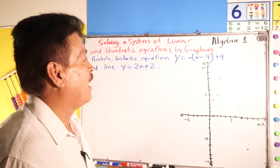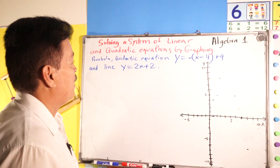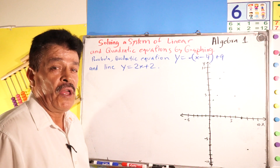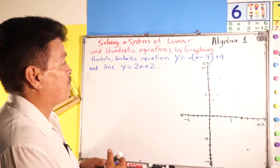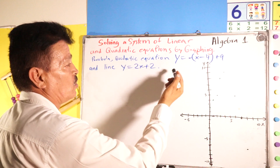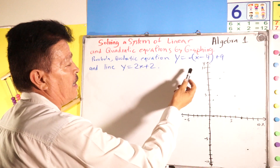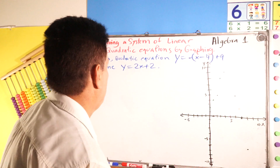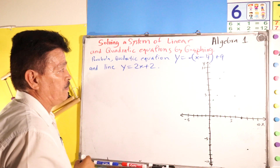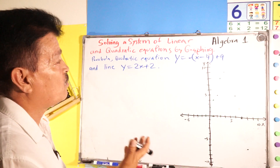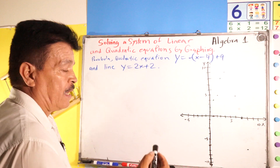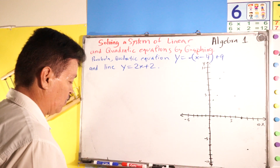In Algebra 1, I will show you how to solve a system of a linear and quadratic equation by graphing. Our problem: the quadratic equation is y equals negative (x minus 4) squared plus 9, and the line is y equals 2x plus 2. We have to solve this system of linear and quadratic equations by graphing.